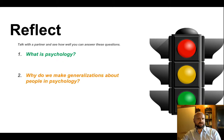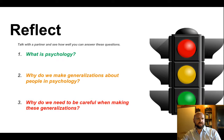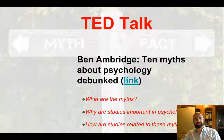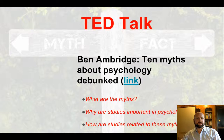Traffic lights or color cards — how well can they answer these questions? You can do a quick check-in, and get them to share with a partner before checking in with the traffic lights. They hold up green if they get it, yellow if they're not sure, and red if they've got no idea, for each of those questions.